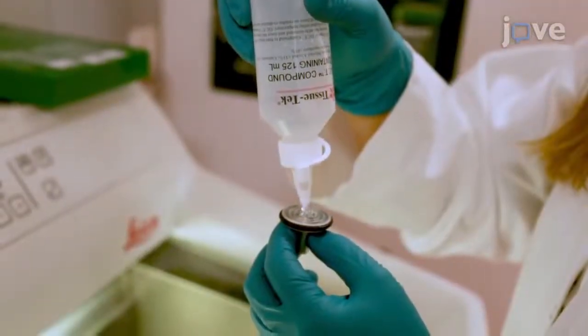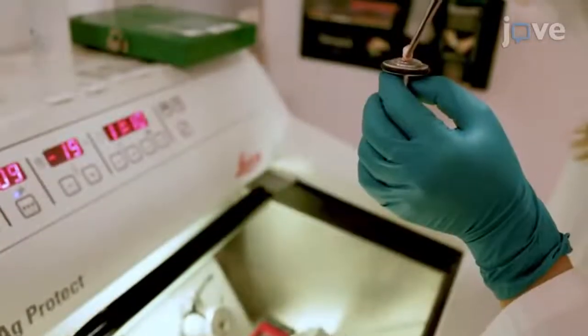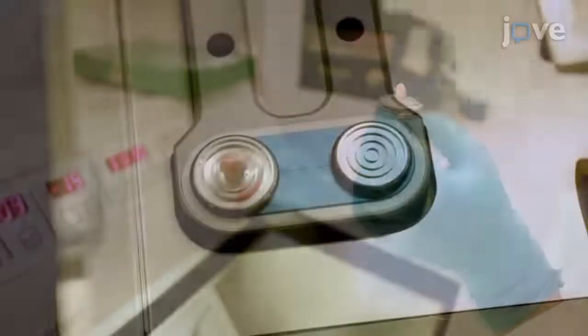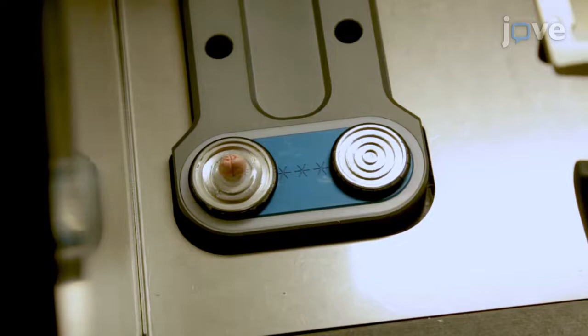Then, cover the tissue holder with embedding medium outside the cryostat and quickly place the frozen tissue specimen in the desired orientation while the embedding medium is still liquid. Transfer the tissue holder back to the cryostat and expose the embedding medium to temperatures below minus 10 degrees Celsius for hardening.